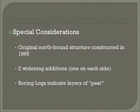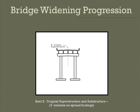As mentioned earlier, there are some special considerations for the structure. The original northbound bridge was constructed in 1965. Since that time, there have been two widening additions, one on each side of the original structure. An additional challenge to the soil structure interaction problem is that the original boring logs indicate that there were several layers of peat around the bridge piers. This picture shows an original view of the bridge taken at Pier 2, showing a cross section of the deck, as well as two columns of cap beam and spread footings underneath.